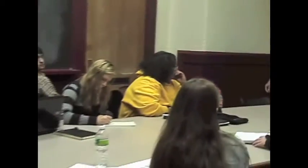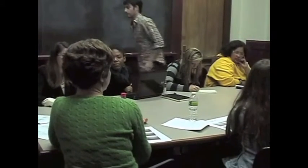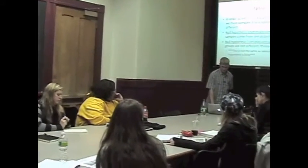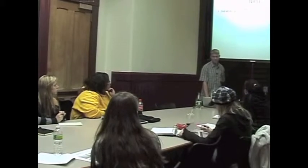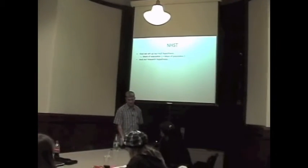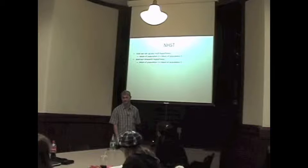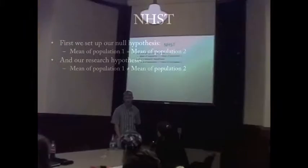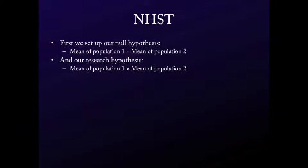A student asks to clarify: before giving the experiment with Prozac, the assumption is that the two groups come from the same population. To do this, first we set up our null hypothesis: the mean of population one equals the mean of population two. Our research hypothesis is that the mean of population one is not equal to the mean of population two. All we can test is the null hypothesis — we can't actually test the research hypothesis. We assume the research hypothesis only if our null hypothesis seems sufficiently unlikely.